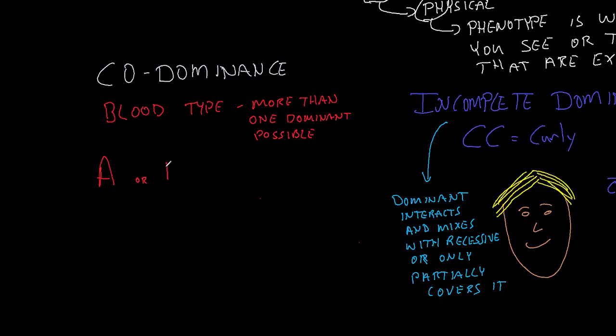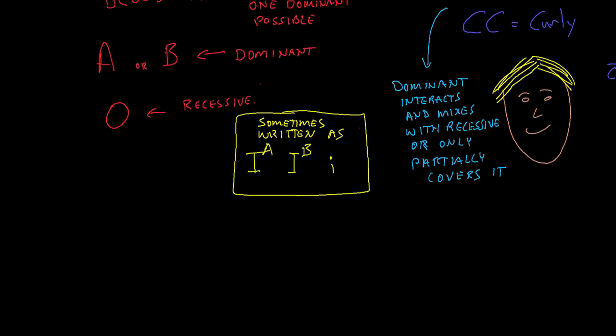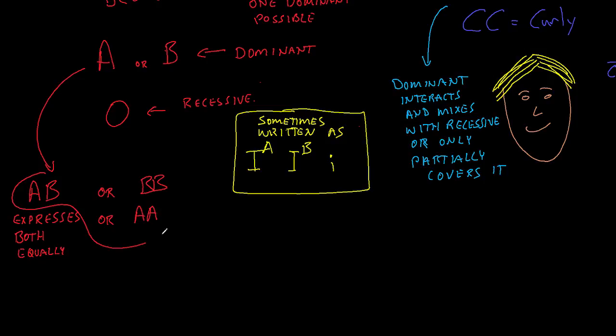The A blood type and the B blood type, and then there's only one version of the recessive, which we represent with an O. So if you get the A, you have one of the dominant forms of the allele for blood type. If you get the B, you have the other one. So you express both of those equally. If you get both Bs, then you have just the dominant B. If you have both As, you have just the dominant A.